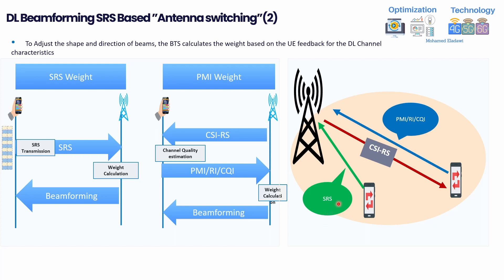The reason is that as users move toward the cell edge, the uplink SRS signal becomes weak, so the SRS feedback is less accurate compared to CSI-RS. Therefore, it's recommended to use CSI-RS at the cell edge. This is why an adaptive mechanism exists between SRS and CSI-RS based beamforming.